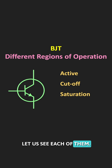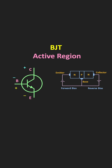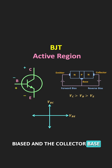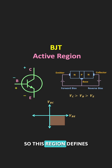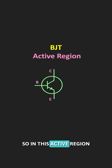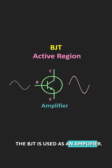In the active region, the base-emitter junction is forward biased, while the collector-base junction of the BJT is reverse biased. Since the base-emitter junction is forward biased and the collector-base junction is reverse biased, this defines the active region of operation. In this active region, the BJT is used as an amplifier.